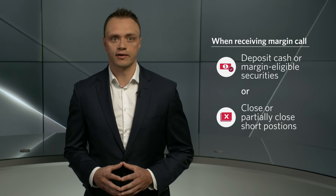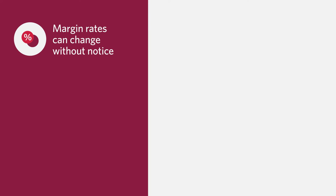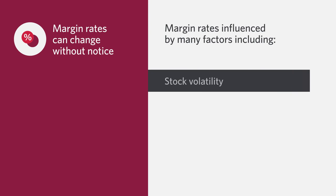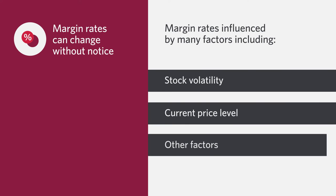This margin calculation is performed every trading day. The margin rate for different stocks can change without notice and can be influenced by many factors, including the stock's volatility, current price level, and other factors. If the stock's margin rate drops and your account does not have sufficient buying power, you'd receive a margin call. If you don't take action, Investor's Edge may do so on your behalf to bring your buying power back in line.